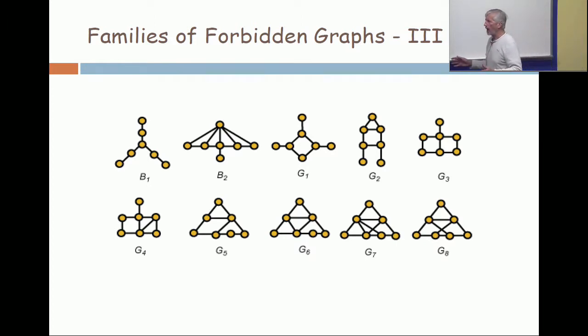In the Gallai characterization of comparability graphs, there's bajillions of them. They're all over the place. So, you see how somebody like me gets examples for a class like this, where I want to say, here's a graph which is not a comparability graph. What I do is I go to Gallai's paper, pull out one of the little examples, and put it on the slide.